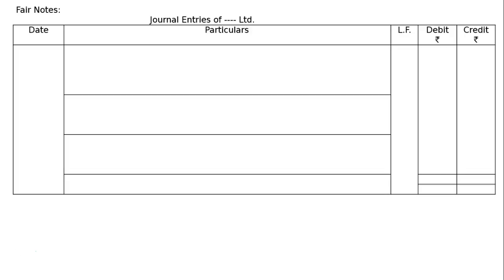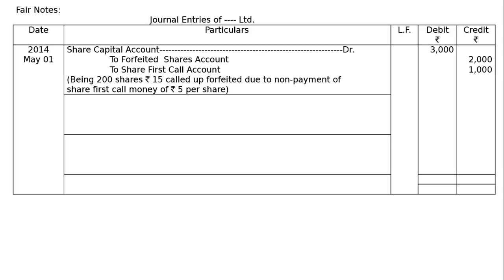First entry — 2014, May 1. Share Capital Account debited: 200 × Rs.15 = Rs.3,000. To Forfeited Shares Account: 200 × Rs.10 = Rs.2,000. To First Call Account: 200 × Rs.5 = Rs.1,000. Being 200 shares of Rs.15 called up, forfeited due to non-payment of first call money of Rs.5 per share.